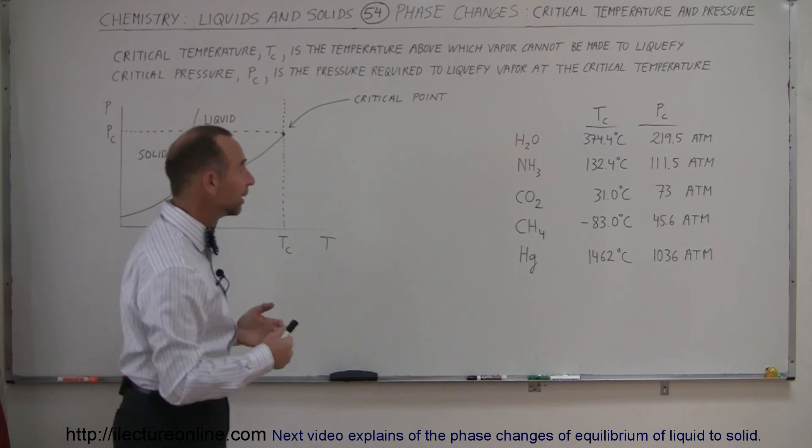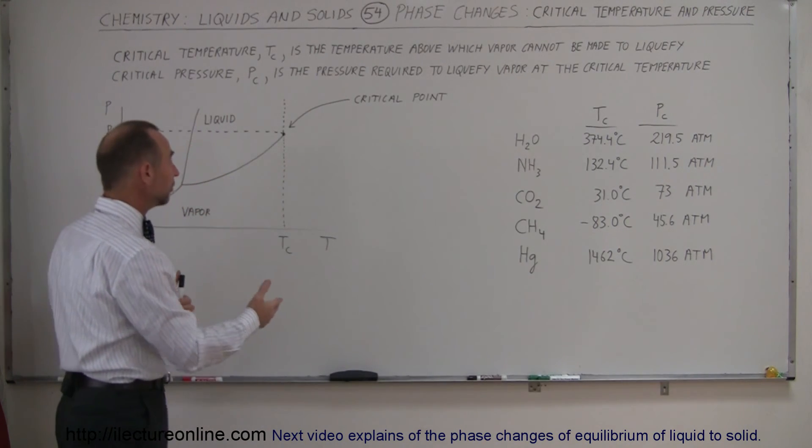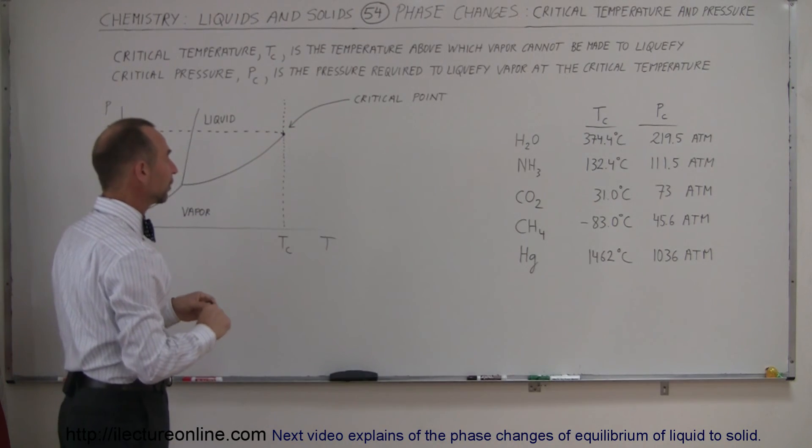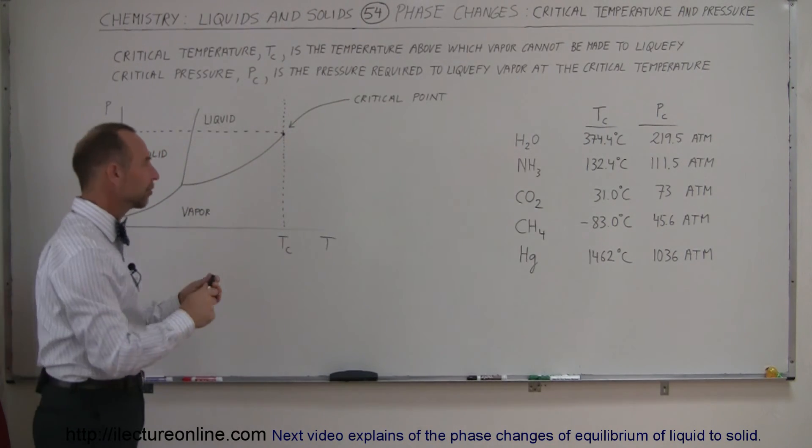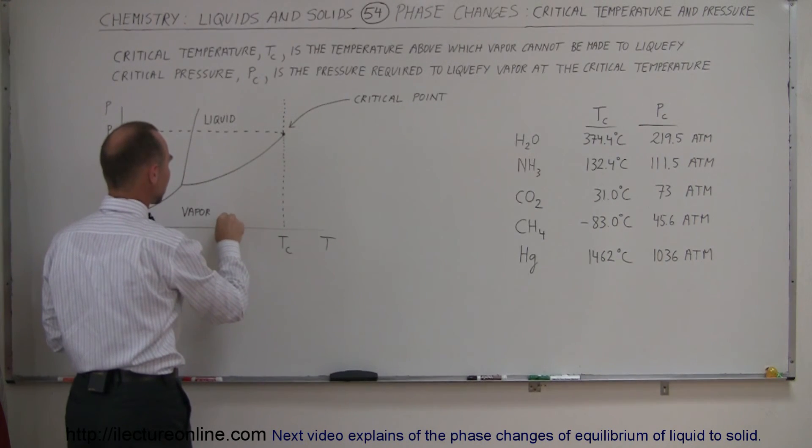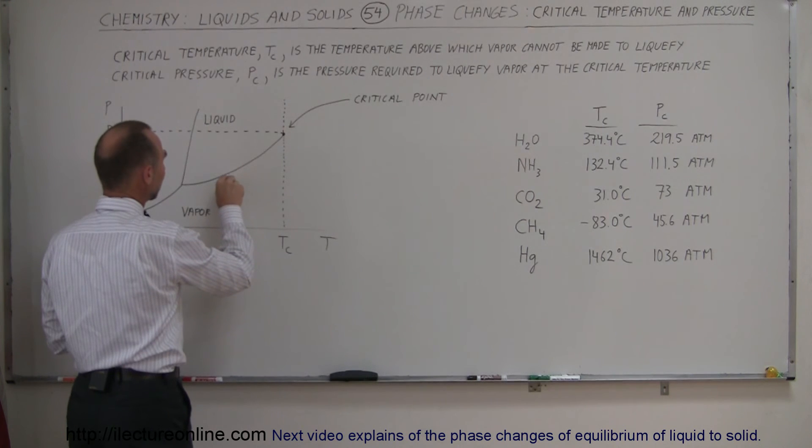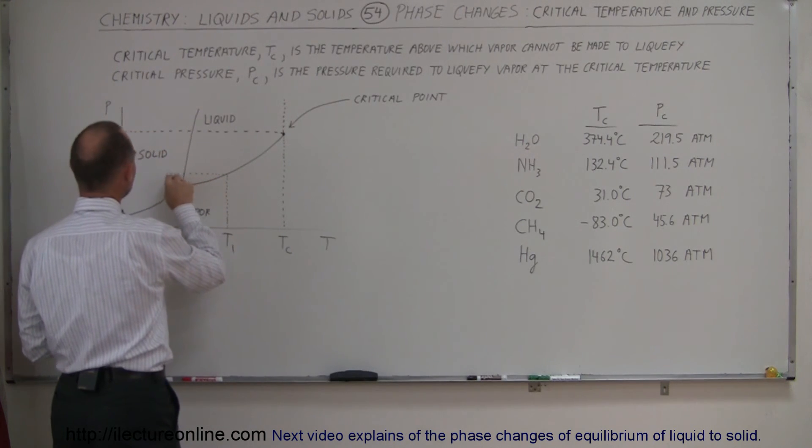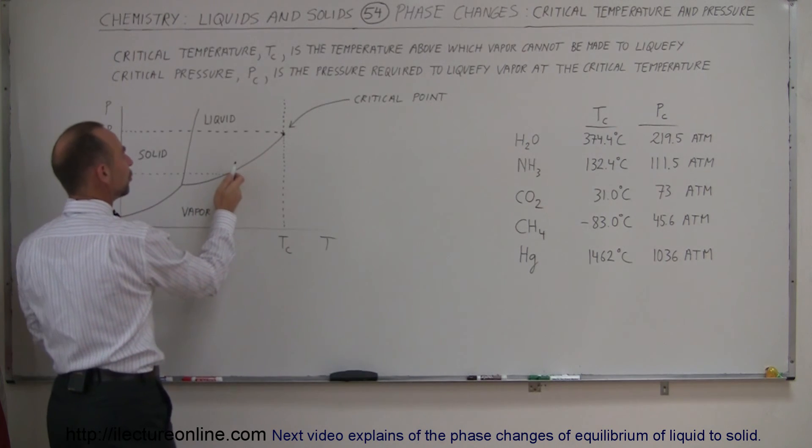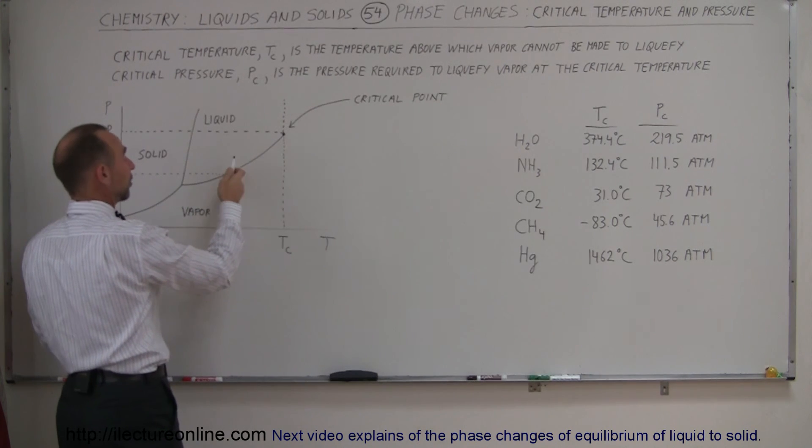But hopefully this little video gives you an idea what that really is. So there's such a thing, a critical point, that beyond it, you cannot turn a vapor into a liquid. Another way to look at it is, for example, to draw a little arrow. Let's say at some temperature right here, let's call it T1, whatever it may be. And you go up here, then you can see how much pressure it would require at that temperature. You just read off the scale here at that temperature to turn a vapor of a particular substance into a liquid.